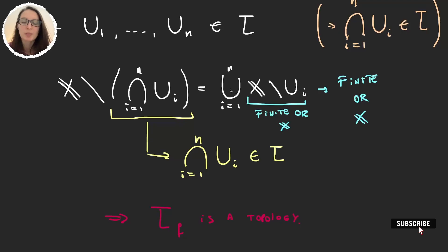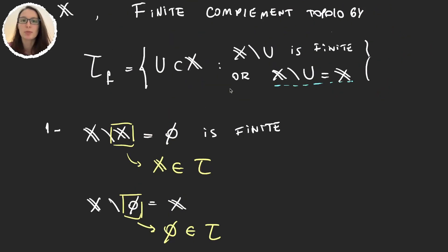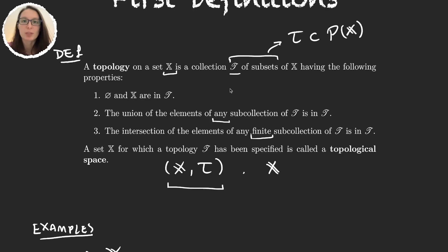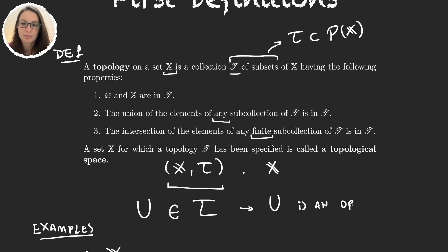Before we finish, there are a few small definitions worth knowing. The elements in the topology — the elements in tau — when we have some set U in tau, we say that U is an open set. The reason why we call them open sets will become clear later in the series.